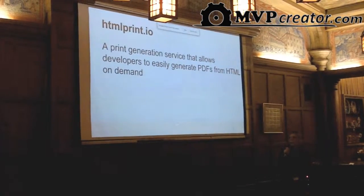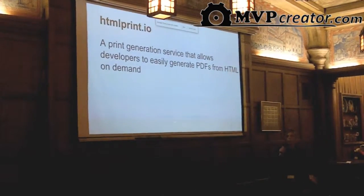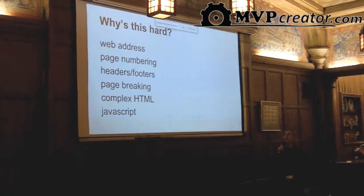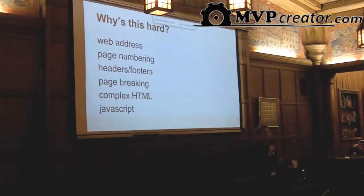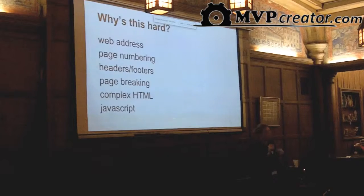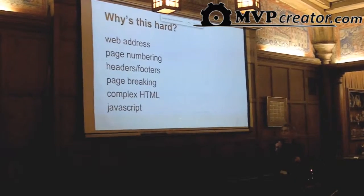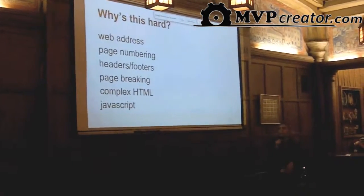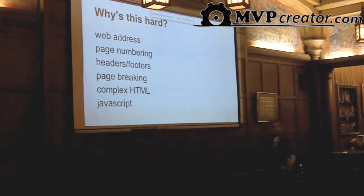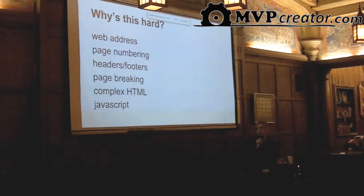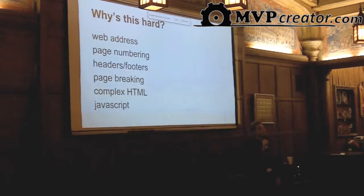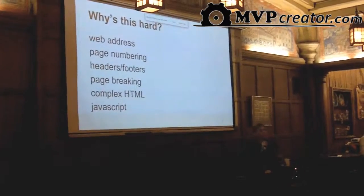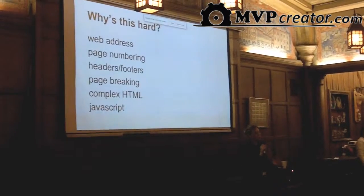So why is this a difficult problem? It seems like it shouldn't be too hard in this day and age. Well, first of all, we don't want our web address on our PDFs that we're generating. Page numbering — we want to be able to customize where that appears. Headers and footers is typically difficult to do in HTML. We want nice page breaking, and we want to be able to generate complex HTML in our PDFs.